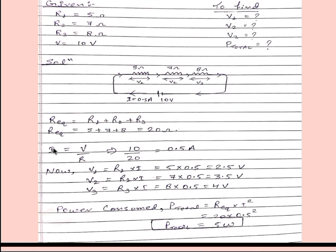Now we can get current I is equal to V by R as per Ohm's law. From here we will get I is equal to 0.5 ampere. Now V1 is equal to R1 into I, V2 is equal to R2 into I, V3 is equal to R3 into I. After putting the value of given resistance and current, we will get the potential difference across different resistors like 2.5 volt, 3.5 volt and 4 volt.